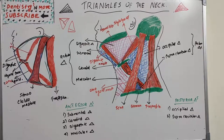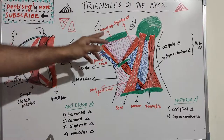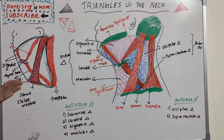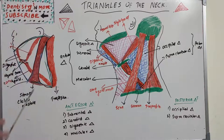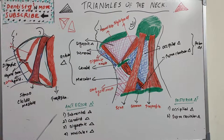Hello everyone, welcome back to another session in dentistry and more. Today we have a very interesting topic in human anatomy — the triangles of the neck. This topic is very important from an exam point of view; it is frequently asked as a short note, short essay, or long essay, because we have the anterior and posterior triangles.